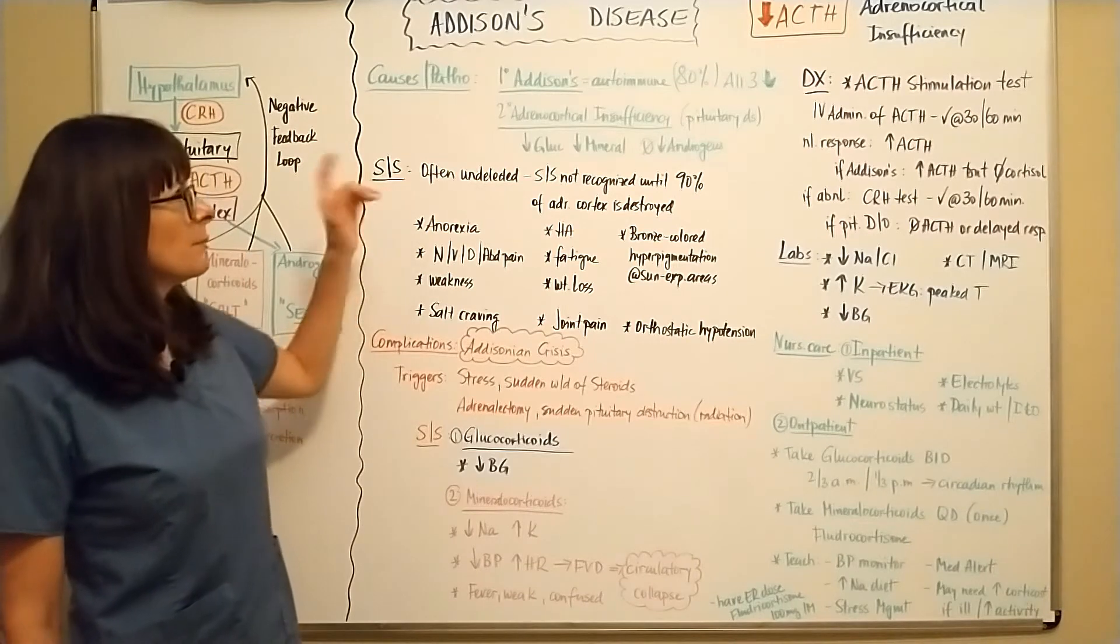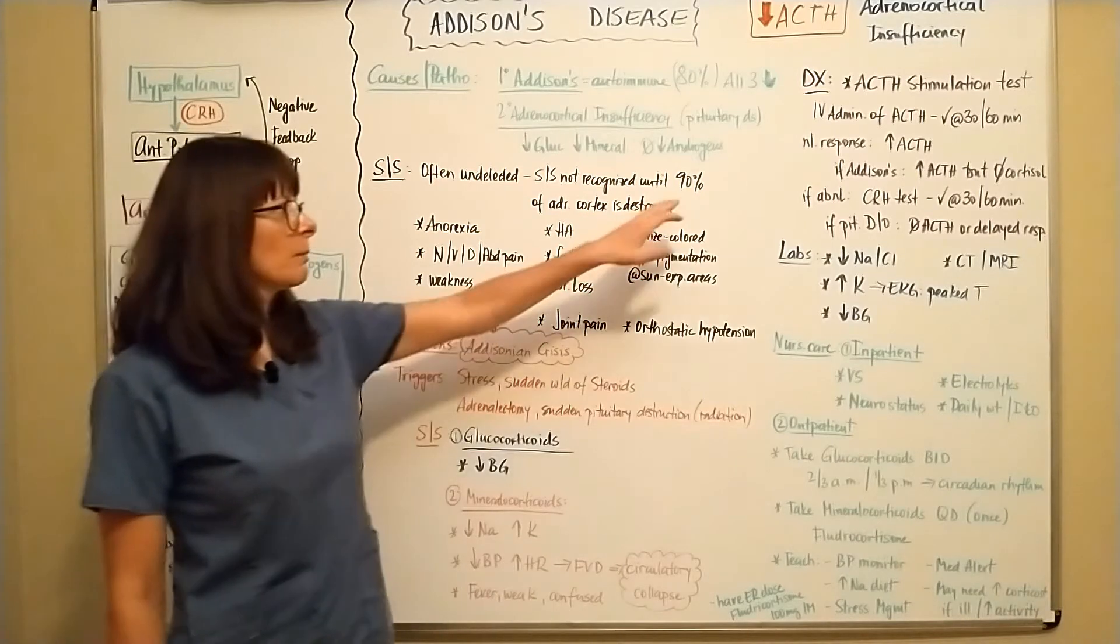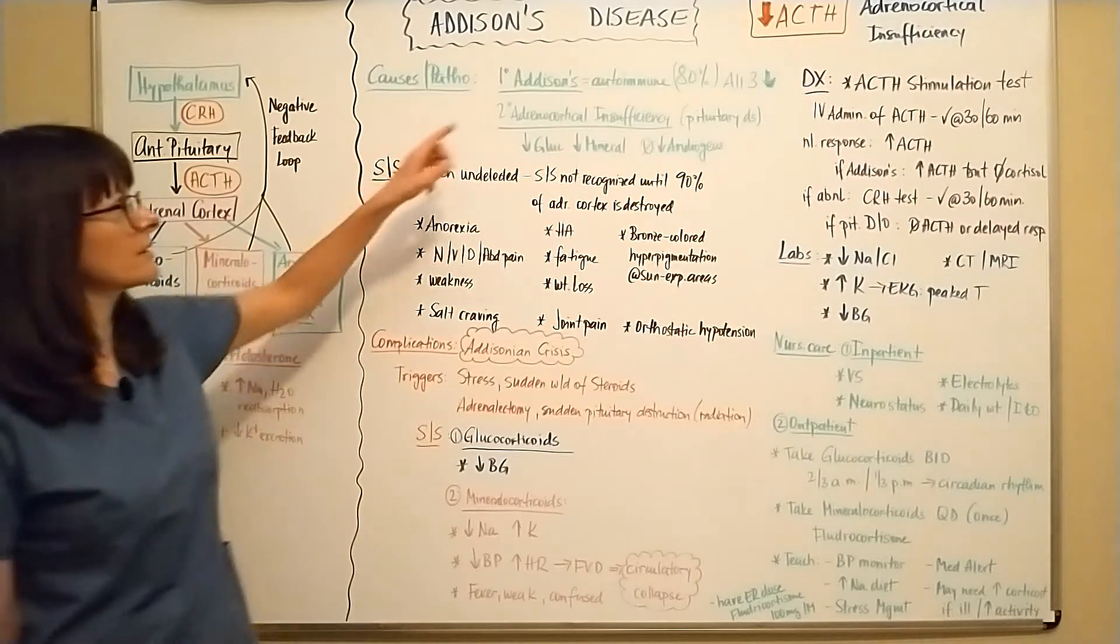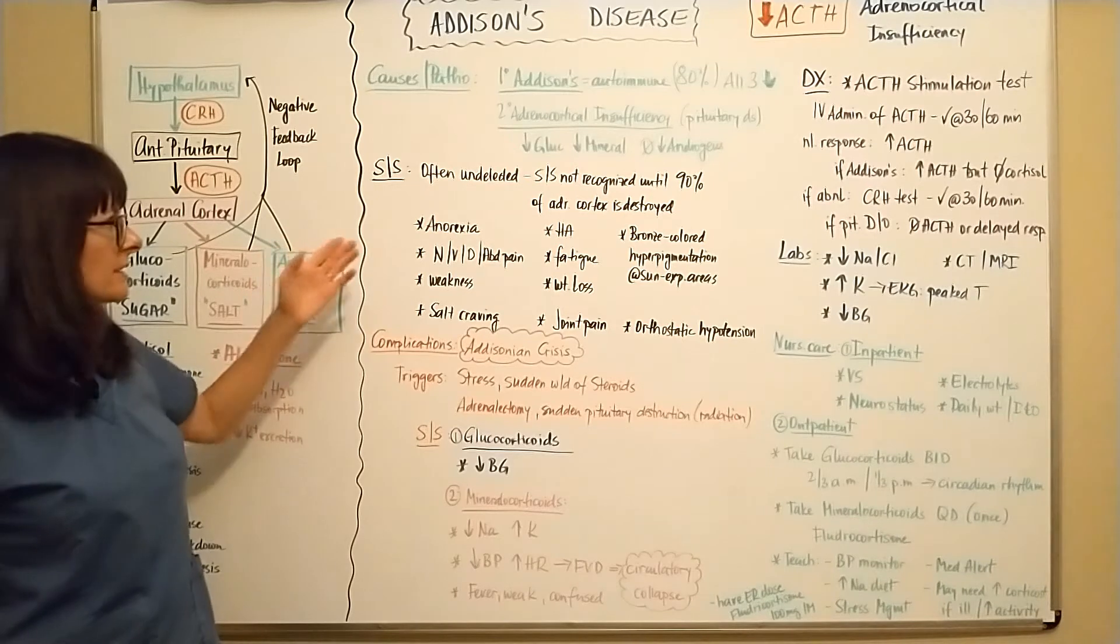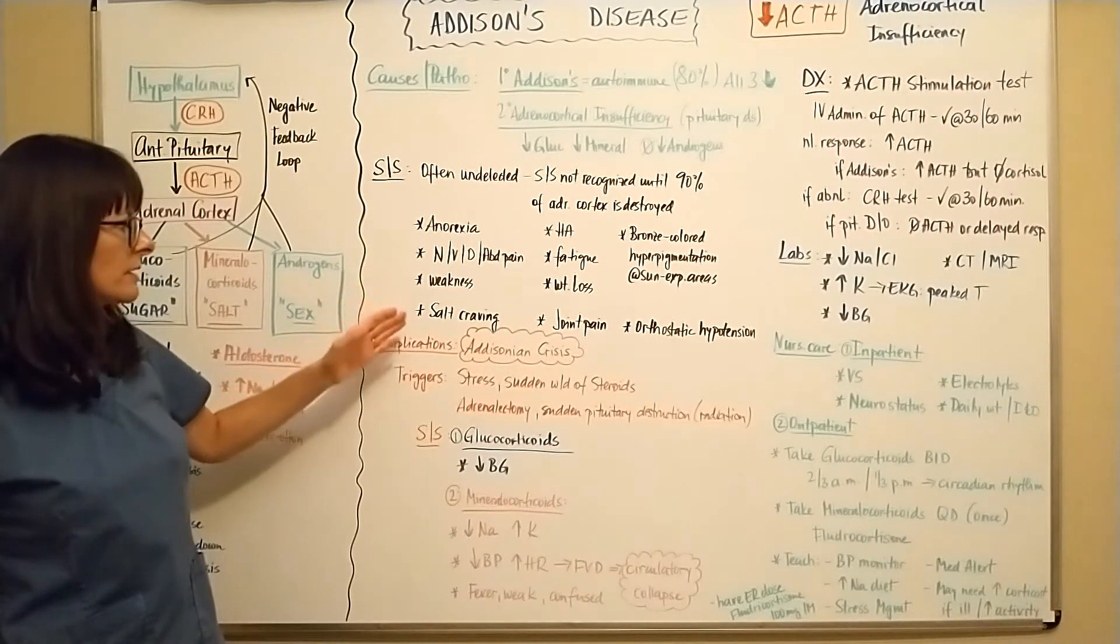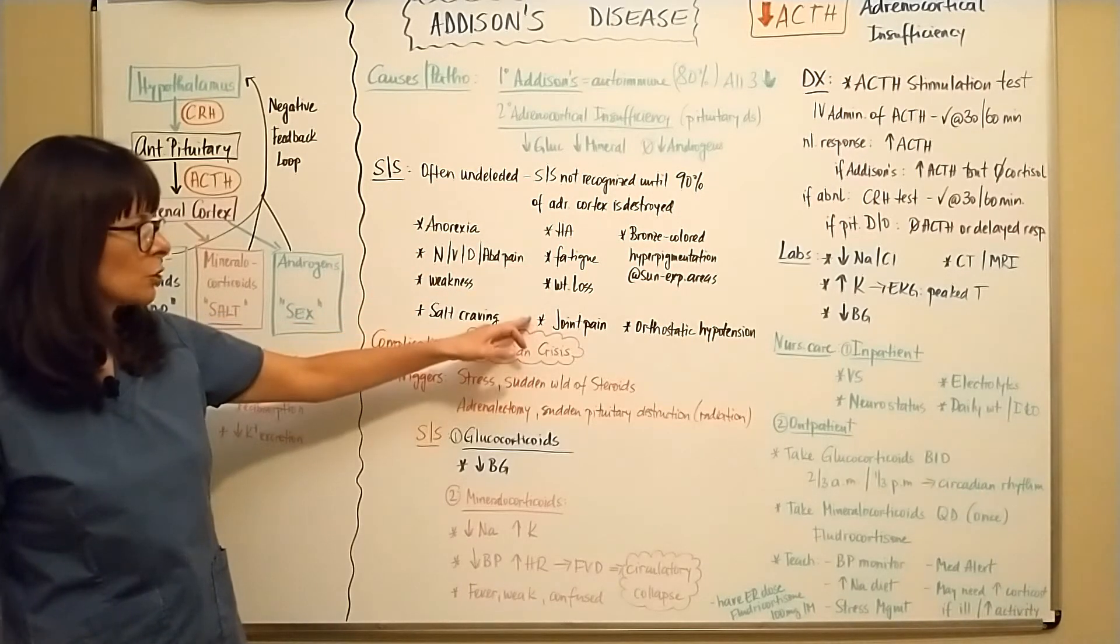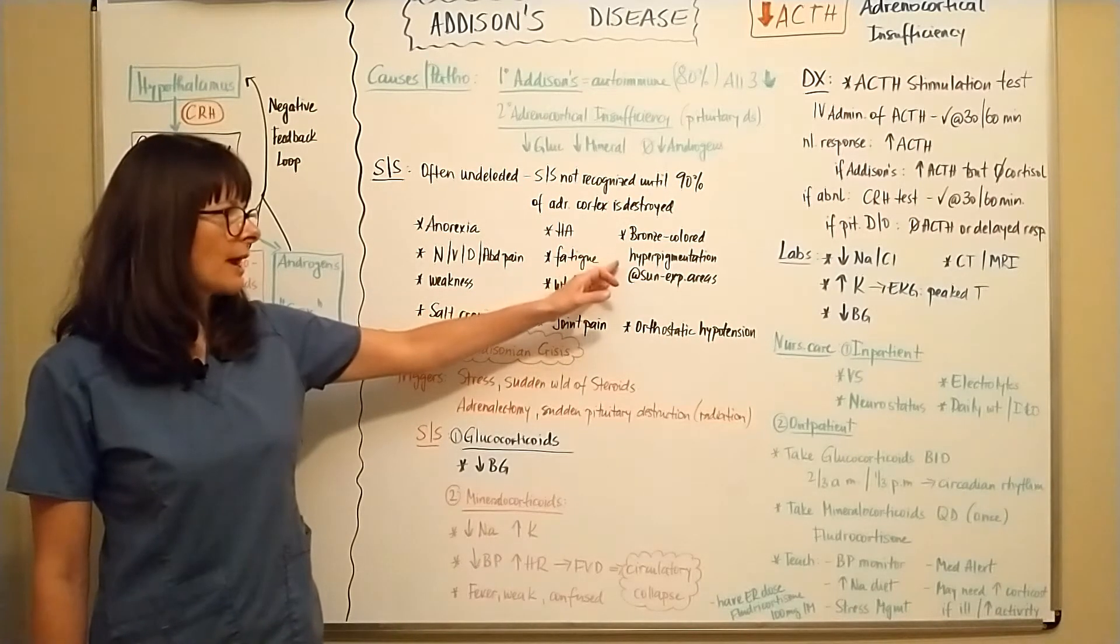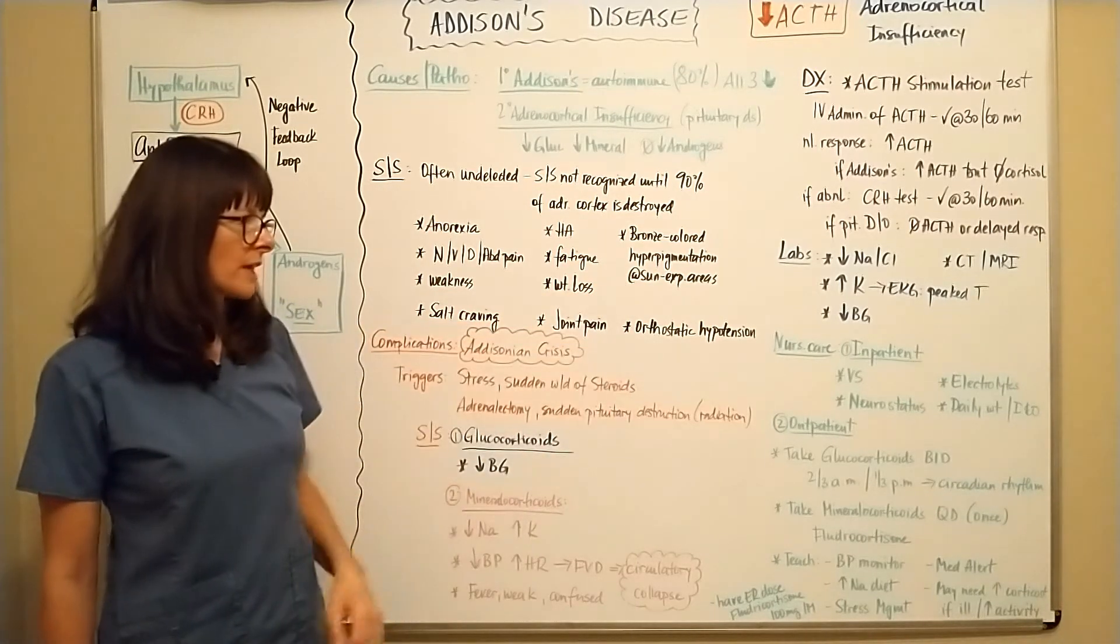Unfortunately, signs and symptoms of Addison's disease are often not recognized or visible until about 90% of the adrenal cortex is destroyed by this autoimmune disease that's causing it. And they can be very vague, such as anorexia, nausea, vomiting, diarrhea, abdominal pain, weakness, salt craving, headache, fatigue, weight loss, joint pain,